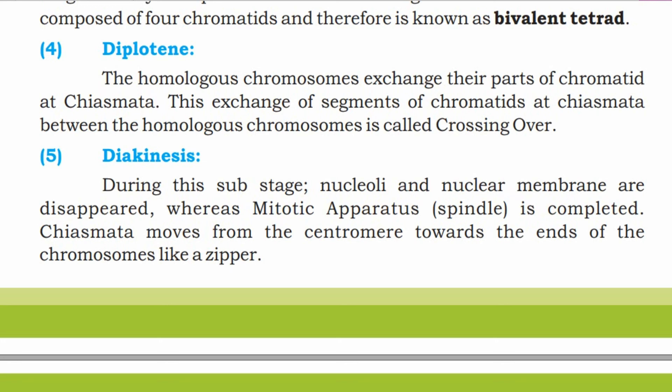The homologous chromosomes exchange parts of their chromatids at chiasmata. This exchange of segments of chromatids at chiasmata between homologous chromosomes is called crossing over.